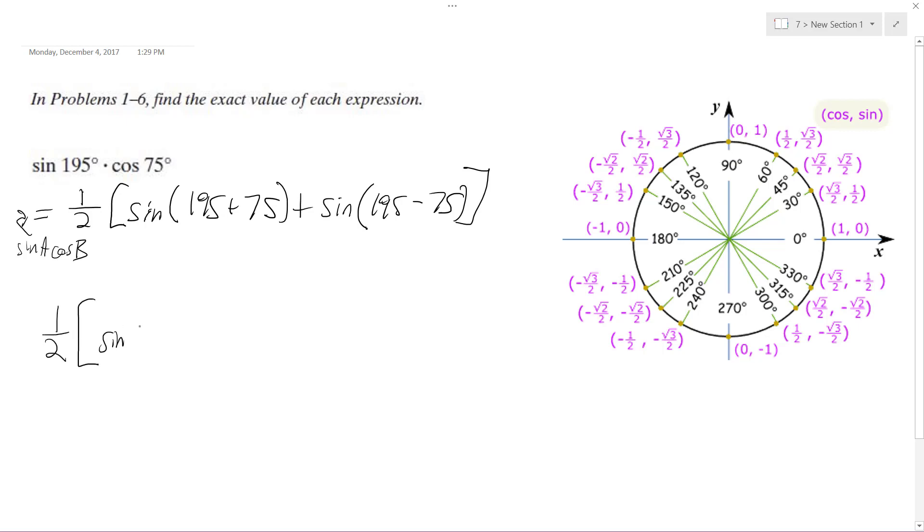of sine 270 degrees plus sine of 120 degrees. So sine of 270 degrees is over here and it equals negative one, plus sine of 120 which is right here is equal to